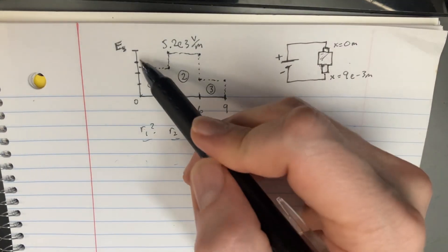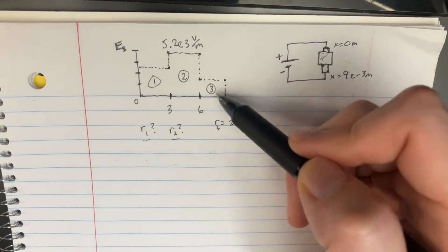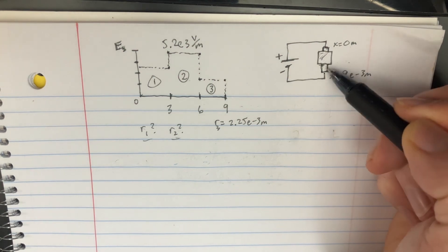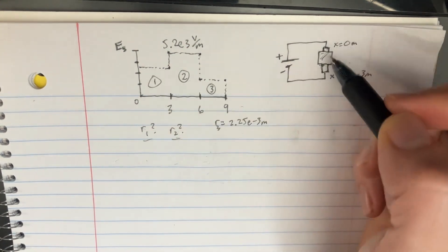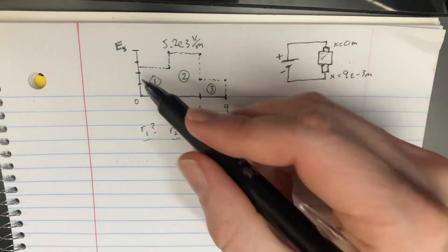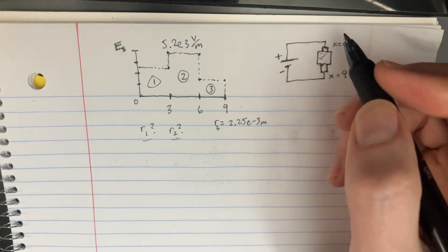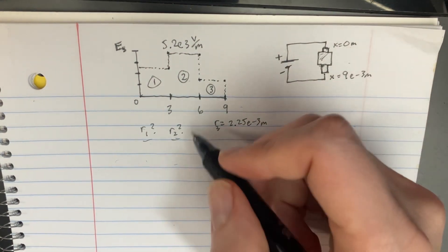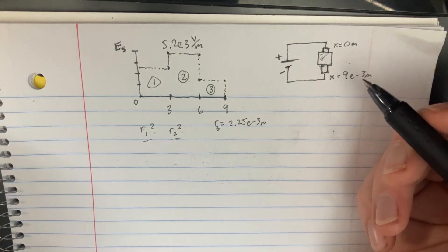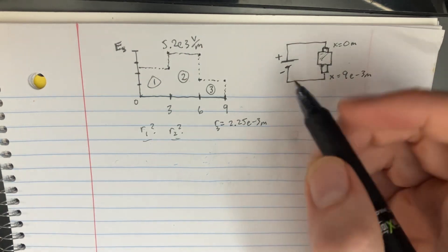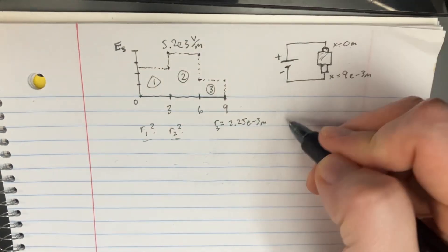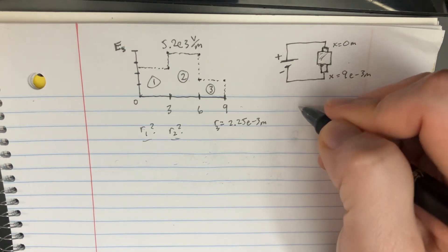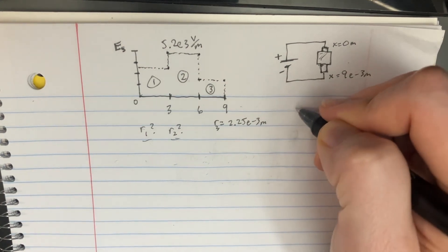In this problem, we're given a graph of the electric field and a rod with different radii along the way. You can see how the electric field corresponds differently to those particular radii. We need to figure out what we know and what equations to use, since we know the electric field.